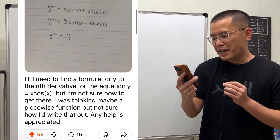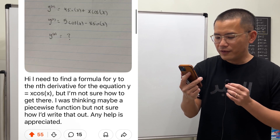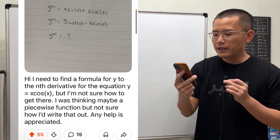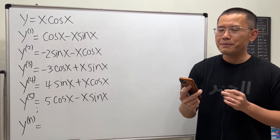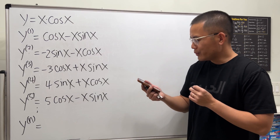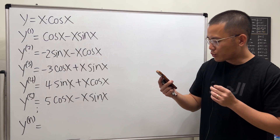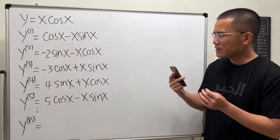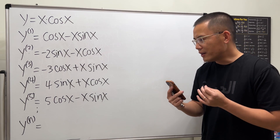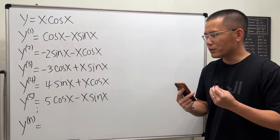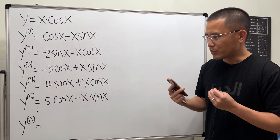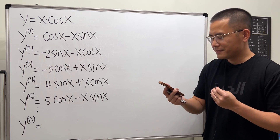Calculus homework: I need to find a formula for the nth derivative of x times cosine x. Let's have a look — you computed the first five derivatives, and we can see a pattern. The hardest part is figuring out how to write a formula for the nth derivative.